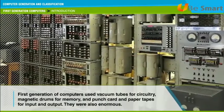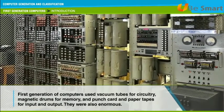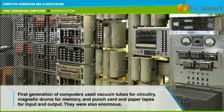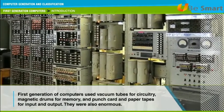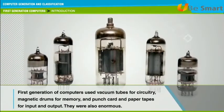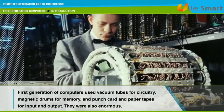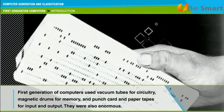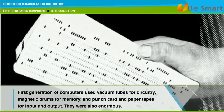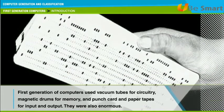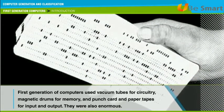Let us begin by learning about the characteristics of the first generation of computers. These computers had some distinct characteristics. They used vacuum tubes for circuitry, magnetic drums for memory, and punch cards and paper tapes for input and output. These computers were typically huge and took up entire rooms.